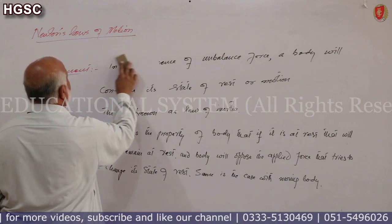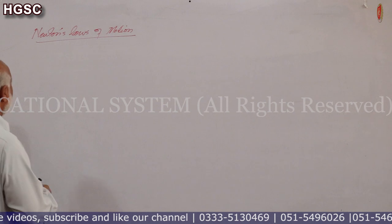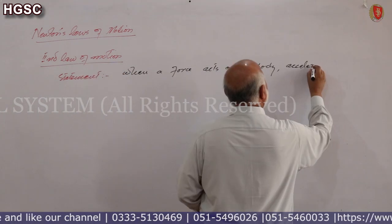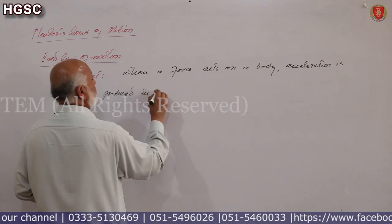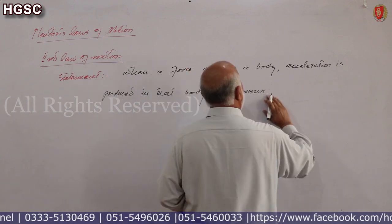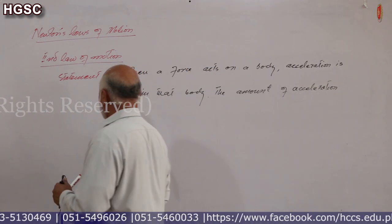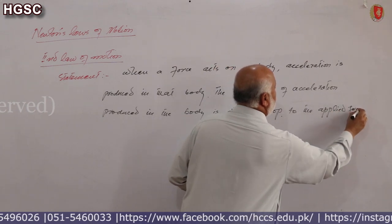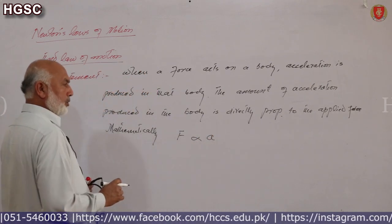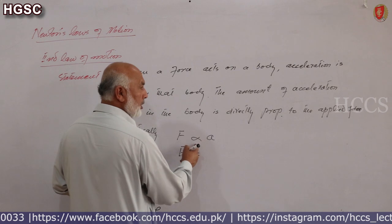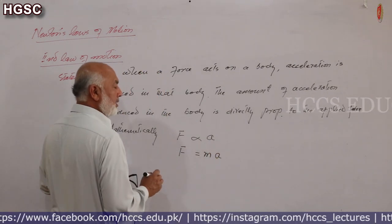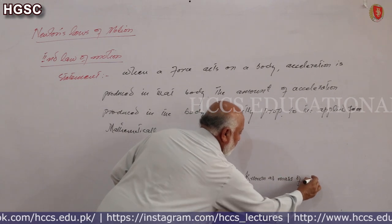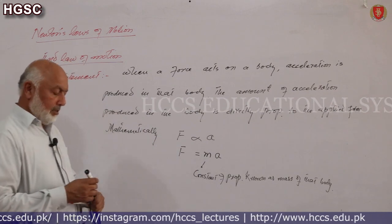Ab Newton's second law of motion: When a force acts on a body, acceleration is produced in that body. The amount of acceleration produced is directly proportional to the applied force. Mathematically, F is proportional to a, and when we solve this proportionality, F = ma, where m is the constant of proportionality known as the mass of that body. This is the mathematical form of Newton's second law.